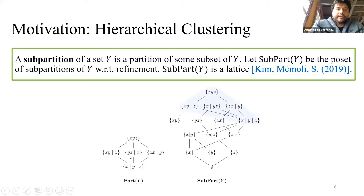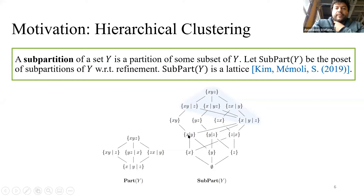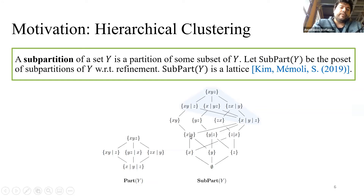Let me give an example. Here we see the collection of all partitions of the set with three elements X, Y, Z. For example, the block {X, Y} and the block {Z} form a partition of X, Y, Z. But we can also have sub-partitions. For example, the sub-partition of X, Y, Z is given by the singleton block {X} and the singleton block {Y}. So they form a partition of {X, Y}, which is a subset of X, Y, Z. This is a sub-partition of X, Y, Z.